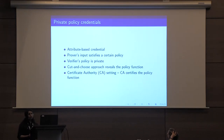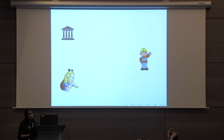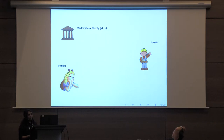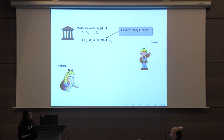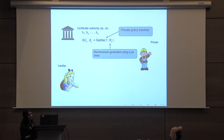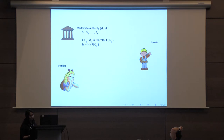In a setting where a certificate authority is available, we can have the CA certify the correct generation of garbled circuits. The CA begins by generating many seeds to be used as seeds of a pseudo-random generator and then generates the garbled circuit for the circuit that represents the policy function of the verifier, using the randomness generated from seed S. He then computes the hash of the garbled circuit, signs the hash, and sends the seed and the signature to the verifier.